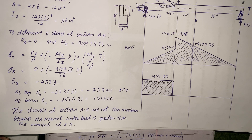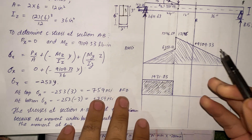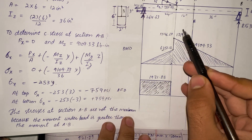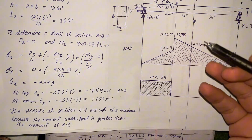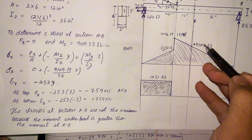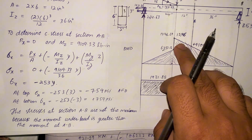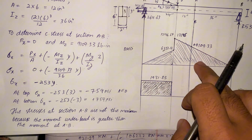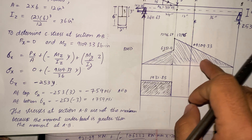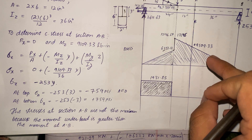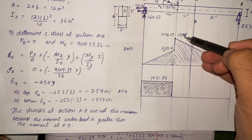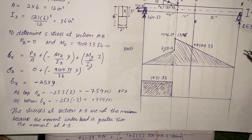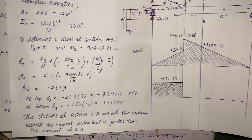Looking at the bending moment values: at section AB the moment is 901.33, but under the point load the moment is 12146, which is greater. When the bending moment is greater, the stresses will also be greater. Therefore the stresses at section AB are not the maximum stresses, because the moment under the load is greater than the moment at AB.